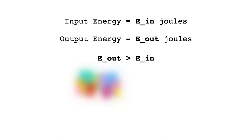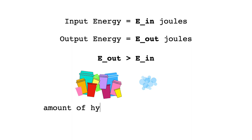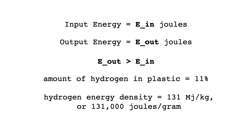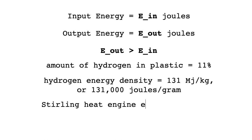E_out comes from the energy we get from the hydrogen in the plastic. By weight, 8 to 14 percent of plastic is hydrogen. We'll use 11 percent for this calculation. The energy density of hydrogen is between 120 and 142 megajoules per kilogram. We'll use 131 megajoules per kilogram, or 131,000 joules per gram. The efficiency of a sterling heat engine is about 40 percent. The efficiency of an electric generator is between 85 percent to 99 percent. We'll use 92 percent.